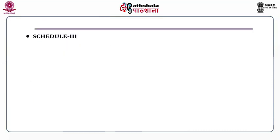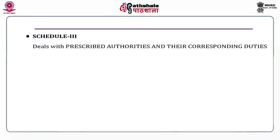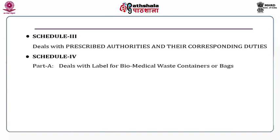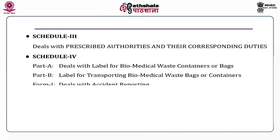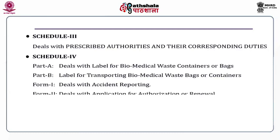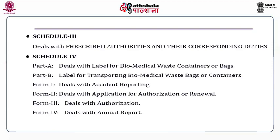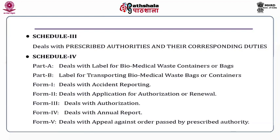Schedule 3 deals with prescribed authorities and their corresponding duties. Schedule 4 Part A deals with labels for biomedical waste containers or bags; Part B deals with labels for transporting biomedical waste bags or containers. Form 1 deals with accident reporting. Form 2 deals with application for authorization or renewal. Form 3 deals with authorization. Form 4 deals with annual report. Form 5 deals with appeal against orders passed by the prescribed authority.